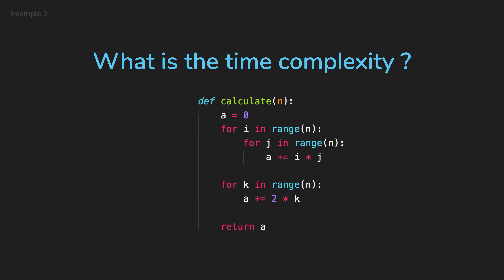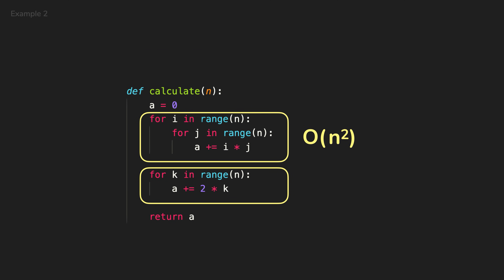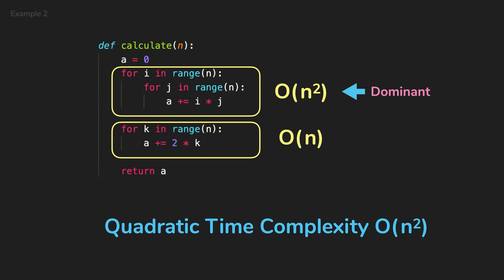Let's look at another example. The first part of the function is a loop in a loop — this line runs N² times, so its time complexity is O(N²). The second part runs N times, so it's O(N). We drop the O(N) because it is not dominant. So the time complexity of this function is O(N²).